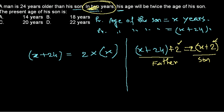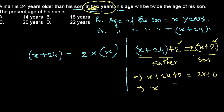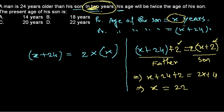Once we set up the equation correctly: X plus 24 plus 2 equals 2 times (X plus 2), which gives us X plus 26 equals 2X plus 4. Rearranging, X equals 22. So the present age of the son is X, which equals 22 years.